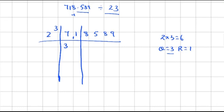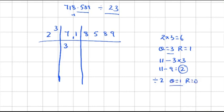Subtract 11 minus 3×3: that is 11 minus 9, which gives 2. Now divide 2 by 2: 2×1=2, so quotient is 1 and remainder is 0. Carry the remainder 0 down next to the next digit 8, making it 08.